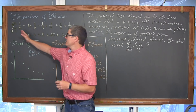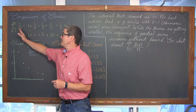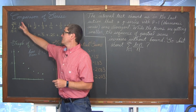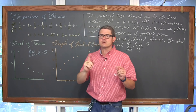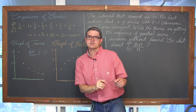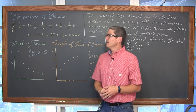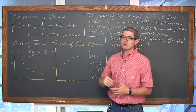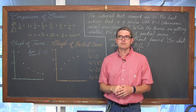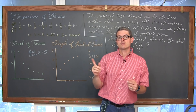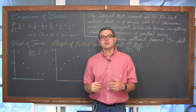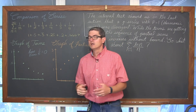The idea is: if you have a p-series — that's 1 over n to a p power — and if p is greater than 0 and less than or equal to 1, then that p-series diverges. And if p is greater than 1, it converges.